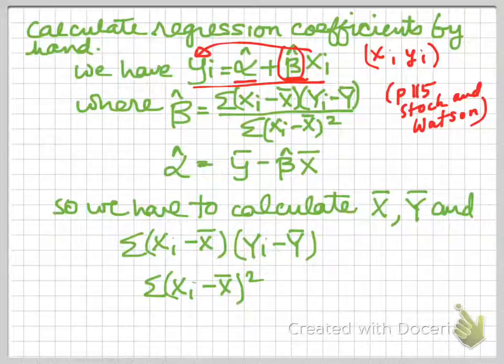Now you know from your textbook that there's a formula for calculating beta hat based on the data. And if you're using Stock and Watson, that formula is there on page 115 of Stock and Watson.